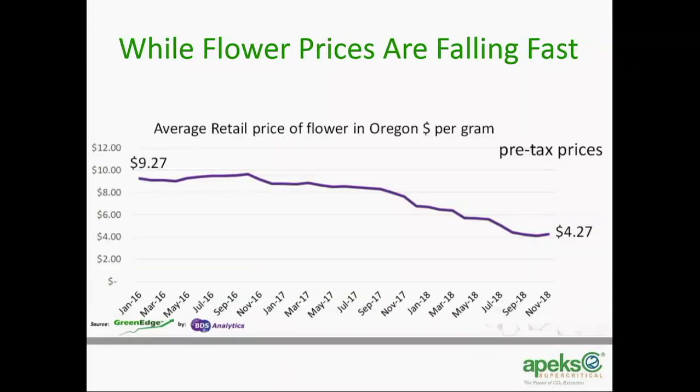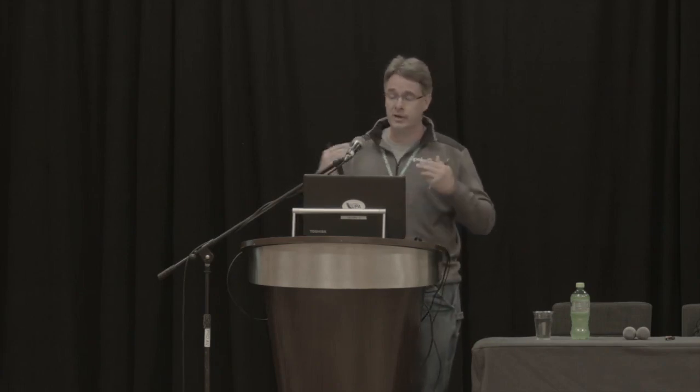While it's growing, it's also important to note that it's commoditizing at the same time. In a commoditizing industry, supply starts to meet demand — when demand's high prices are high, then supply ramps up and eventually meets or overshoots demand. That's exactly what happened in Oregon, which has the worst-case scenario: supply exceeding demand significantly, crushing the flower price from $9.27 in January 2016 down to $4.27 in November 2018. We've seen significant price depression and commoditization in the Oregon flower market.